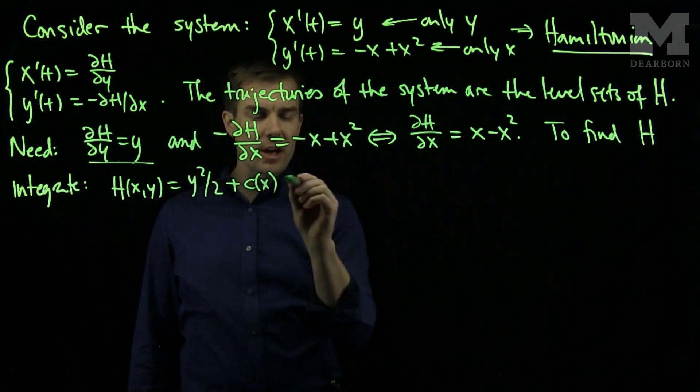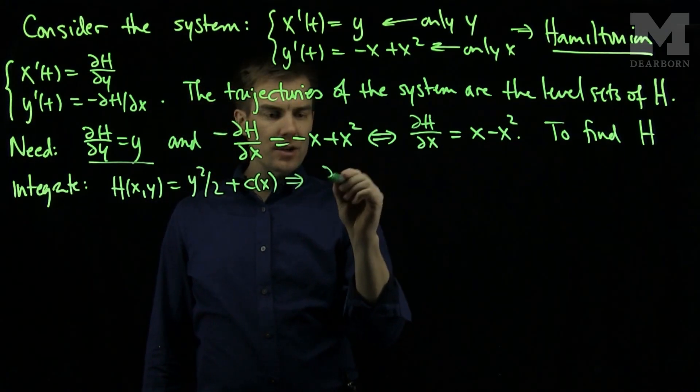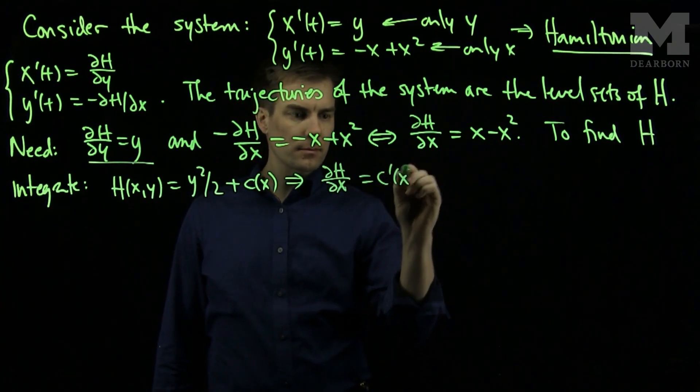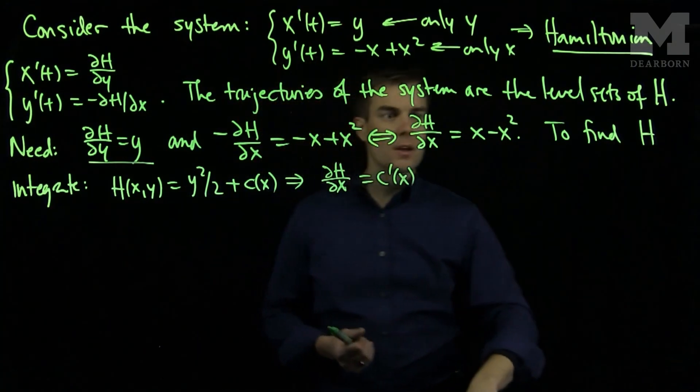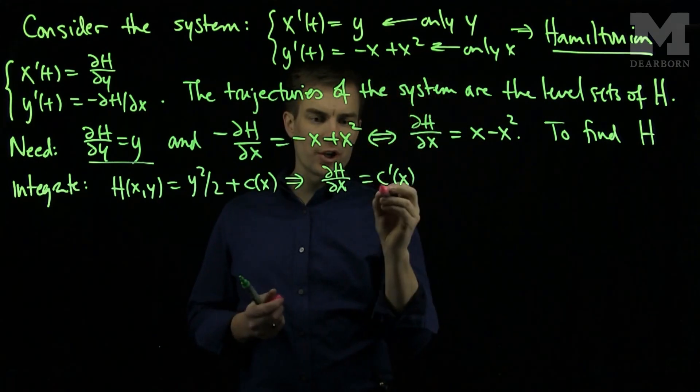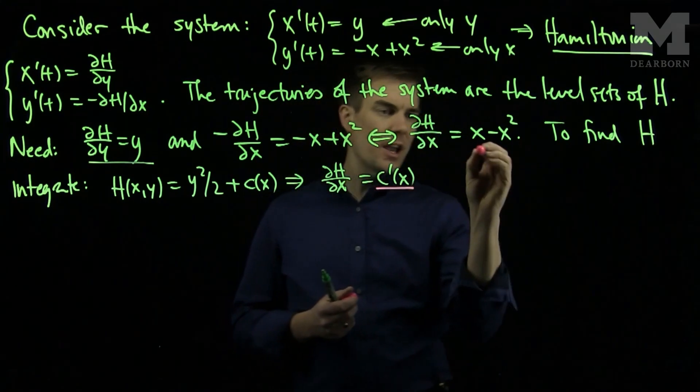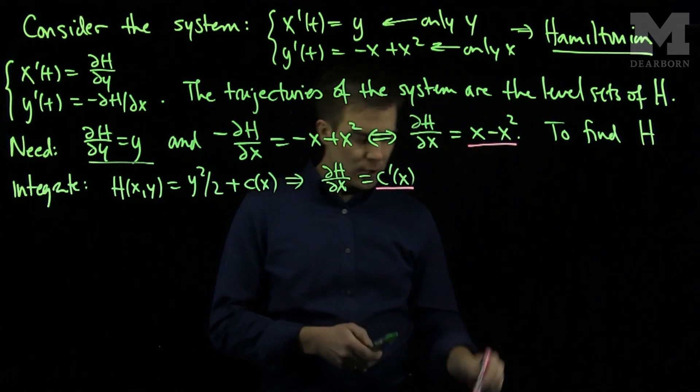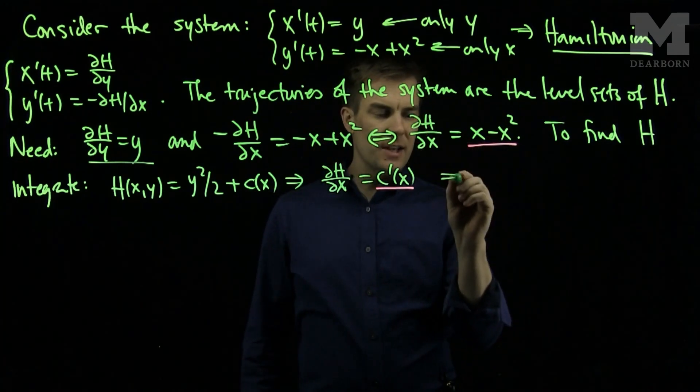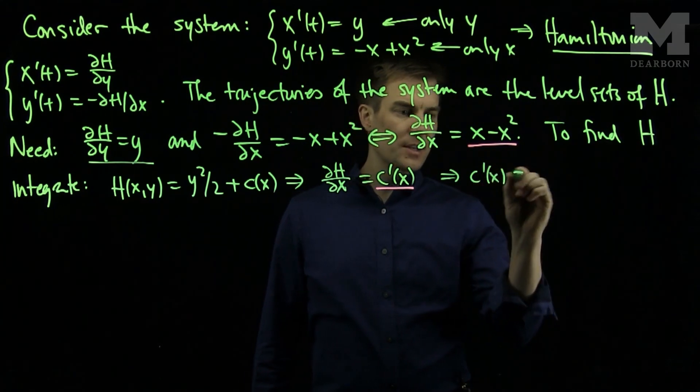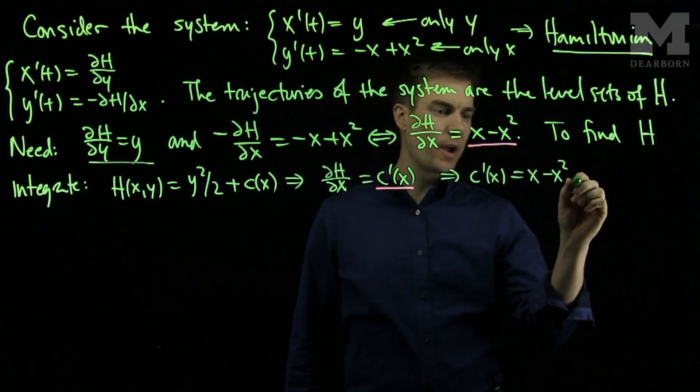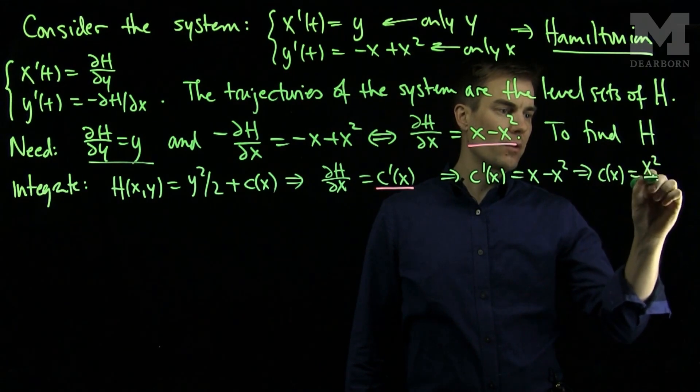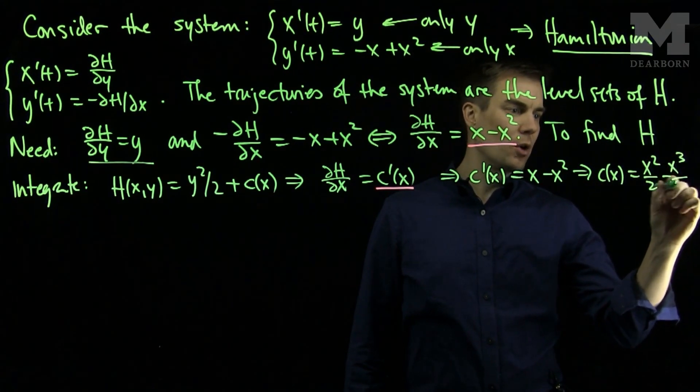Then, after we integrate, we differentiate to conclude that ∂H/∂x = c'(x). Now, we notice that ∂H/∂x = c'(x) and ∂H/∂x = x - x². So our conclusion from this is that c'(x) = x - x², which tells me that c(x) = x²/2 - x³/3.